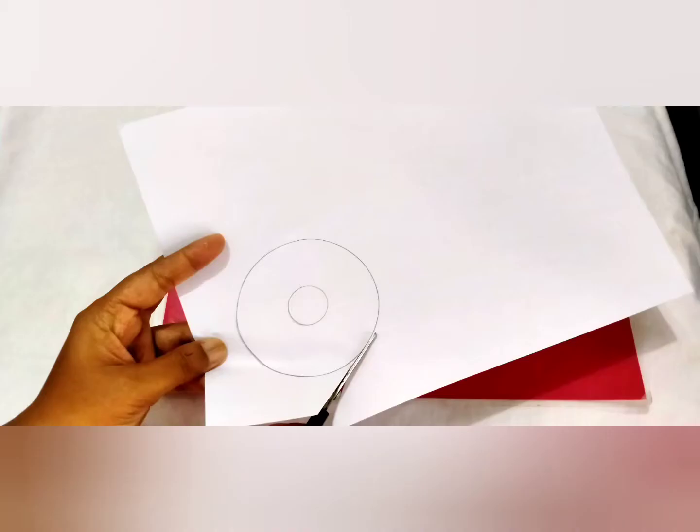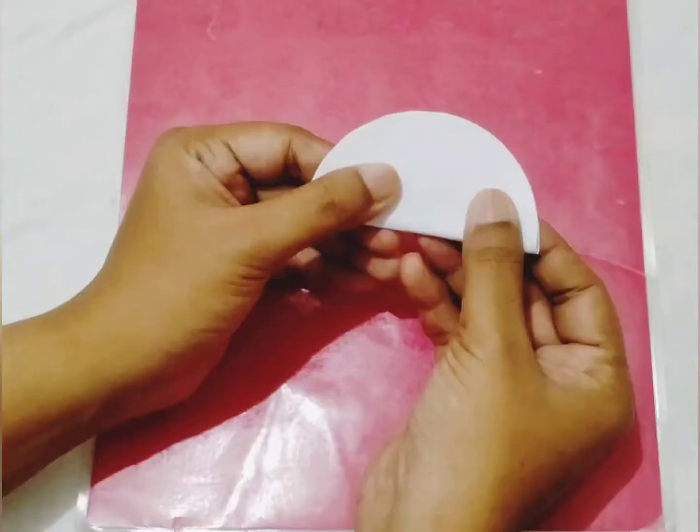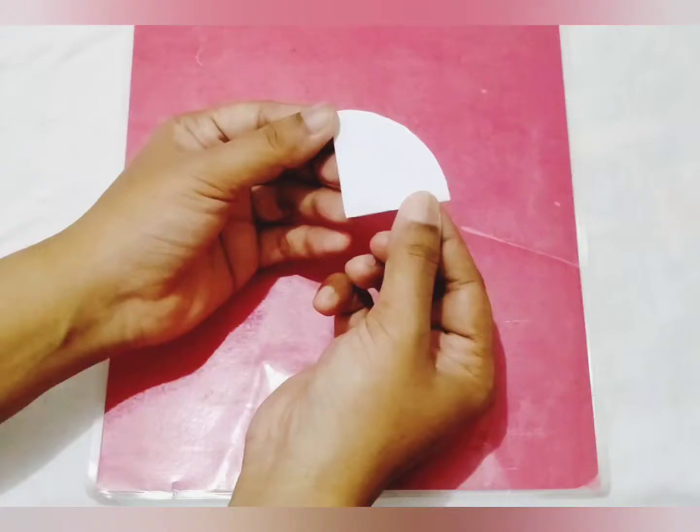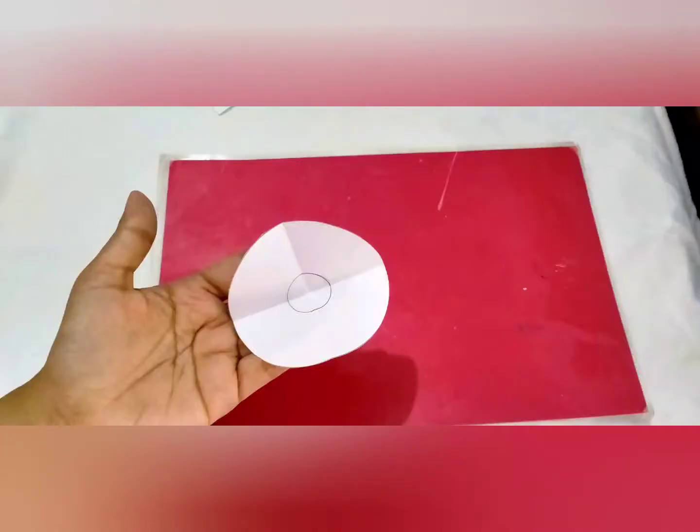After that, you cut it. Then, you fold it into 4. So first, you fold it into half. It is semi circle. Then, fold it one more time. Then you will have a quarter circle like this. Can you do it? Then, you open it. Now, you see the line, right?